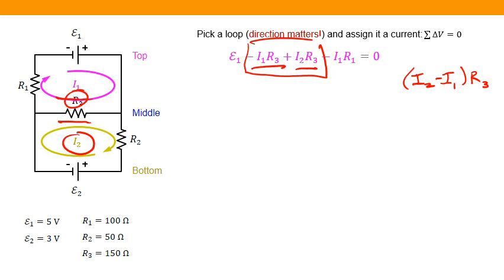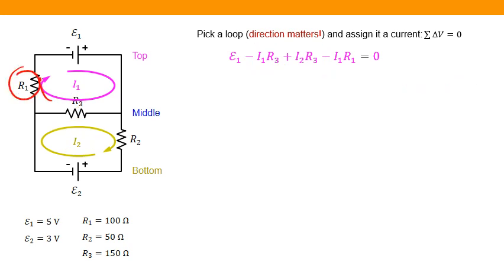So like I said, this would be I3, the current through that middle resistor is going to be the combination of the two. As we come back around, then we hit the first resistor.